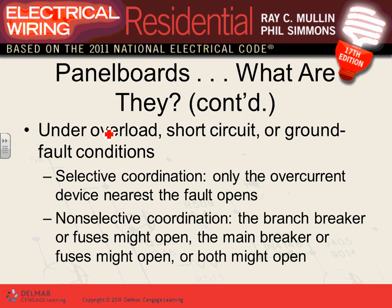Selective coordination versus non-selective coordination: if there's a short circuit in one of these lights above your head, you'd want only that circuit breaker to trip — not the main for the whole building. If only the nearest circuit breaker trips, that's selective coordination. Non-selective coordination is a race — multiple circuit breakers may trip simultaneously.